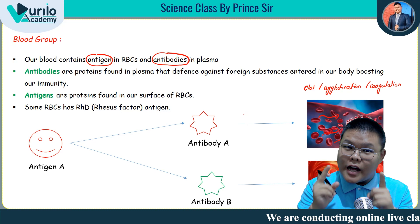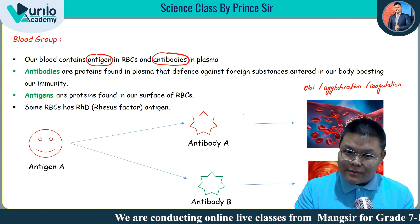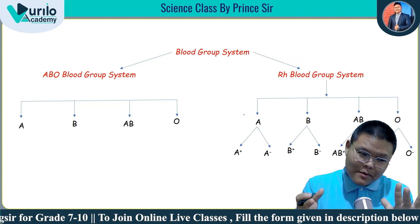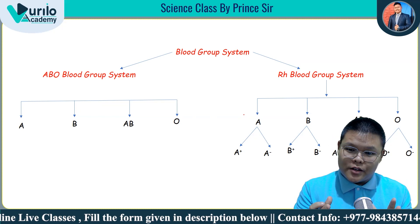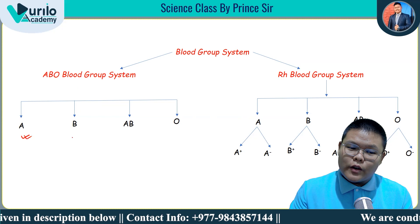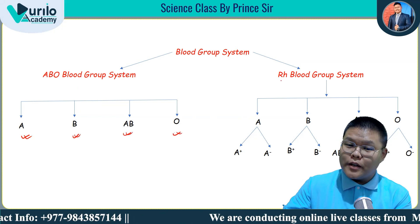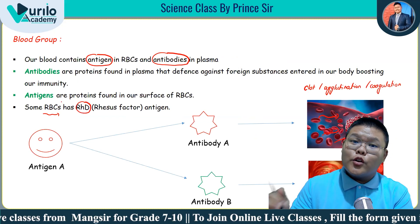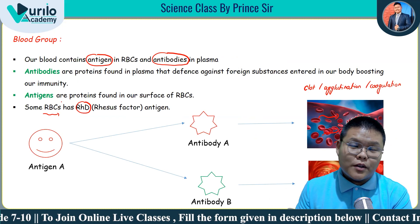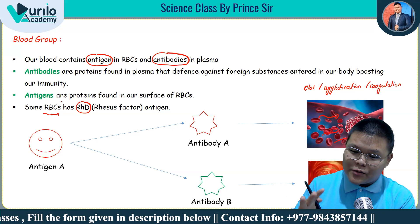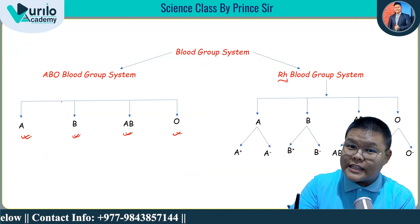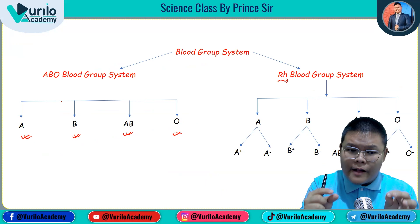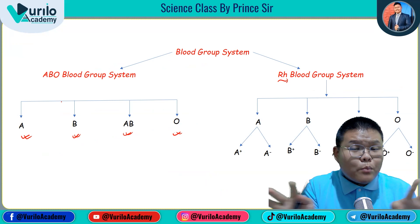Now, the blood group systems we generally study include the ABO blood group system and the Rh blood group system. The ABO system has four blood groups: A, B, AB, and O. The Rh blood group system is based on the presence or absence of the Rh (Rhesus) factor antigen on the RBCs — this antigen was discovered in Rhesus monkeys. If the Rh antigen is present, the person is Rh positive; if absent, they are Rh negative.